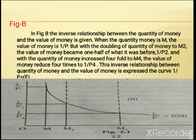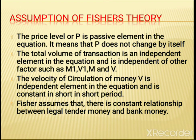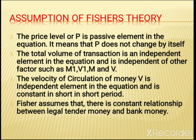Next, the assumptions of Fisher's theory. First, the price level P is a passive element in the equation, meaning P does not change by itself. Second, the total volume of transactions T is an independent element and is independent of other factors such as M, V, M1, and V1. Third, the velocity of circulation of money V is an independent element and is constant in the short period. Fisher also assumes that there is a constant relationship between legal tender money and bank money.